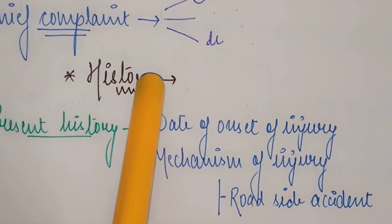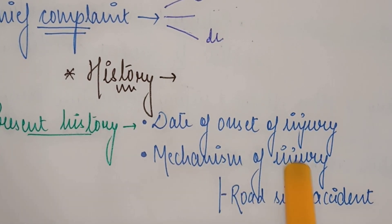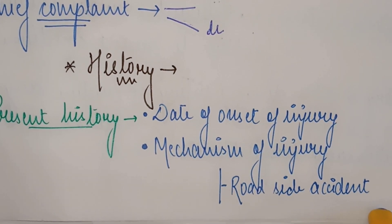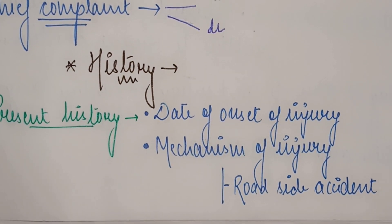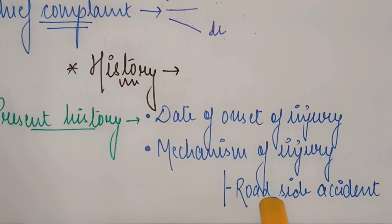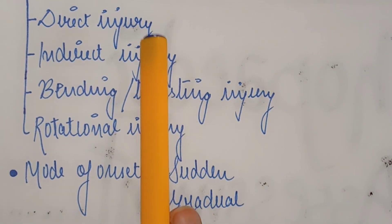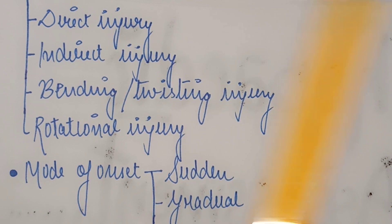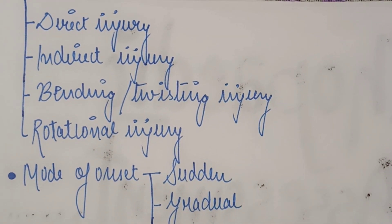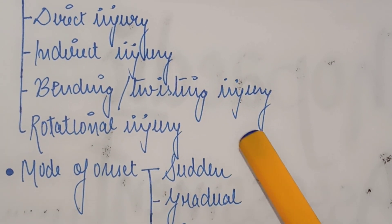We have to mention the mechanism of injury — what was the mechanism of injury. Whether the patient had a fall, a roadside accident, a fracture, or traumatic injuries. The second point is whether the injury was direct — meaning directly hit — or indirect, such as a fracture, twisting, or rotation.